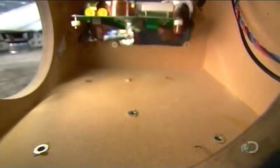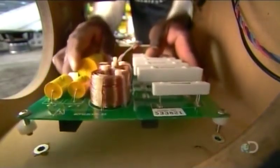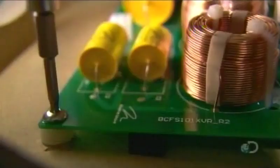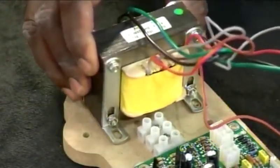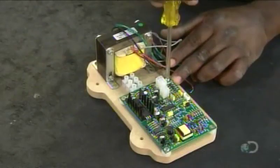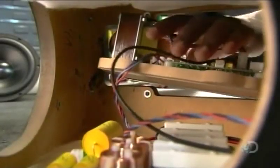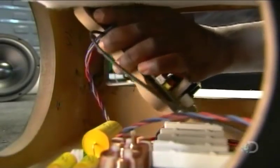He then installs the crossover unit, which splits the audio signal to send low notes to the woofer and the rest to the electrostatic panel. Next up is the power supply and step-up transformer for boosting the amplifier signal. He attaches the assembly to the interior wall of the woofer.